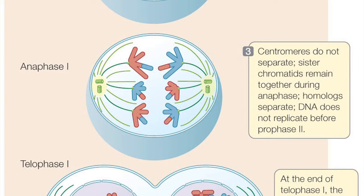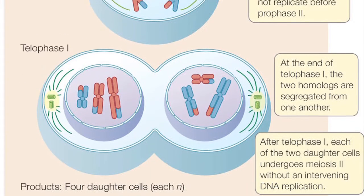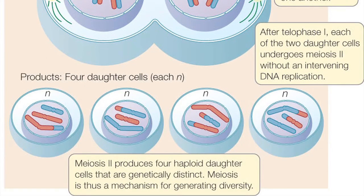Homologs separate and DNA does not replicate before prophase II. At the end of telophase I, the two homologues are separated from one another. After telophase I, the two daughter cells go through meiosis II, which is much like mitosis, only without an intervening DNA replication.